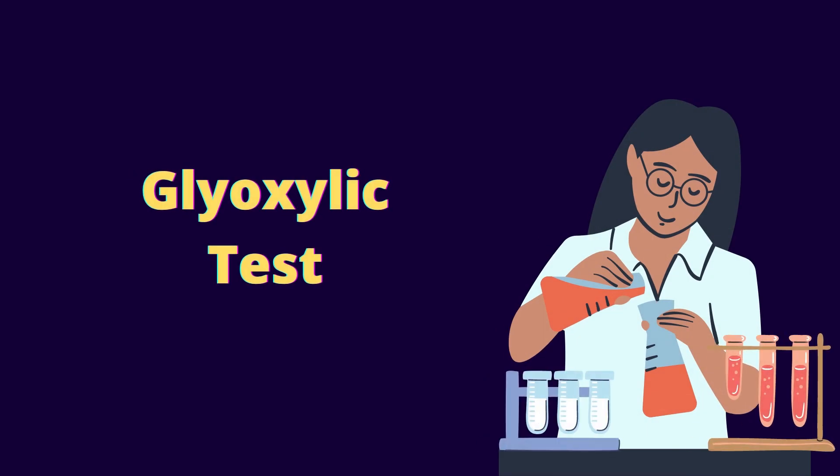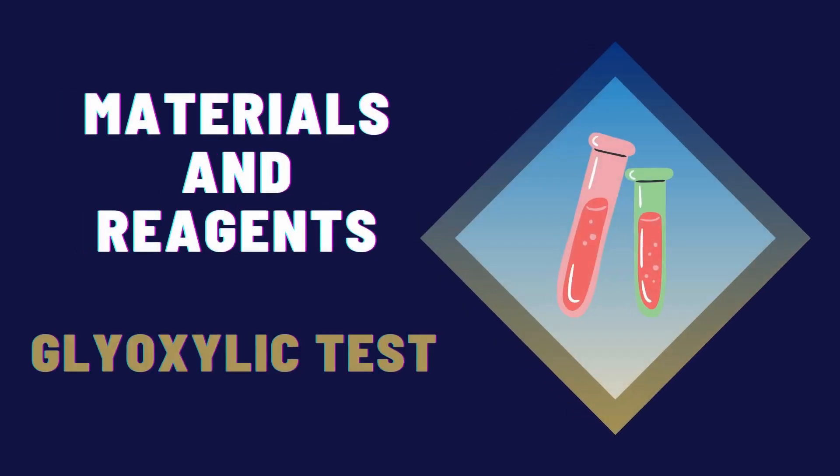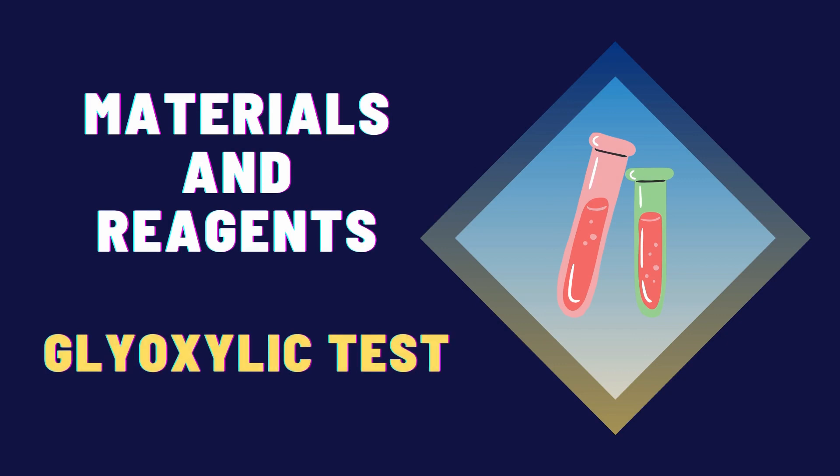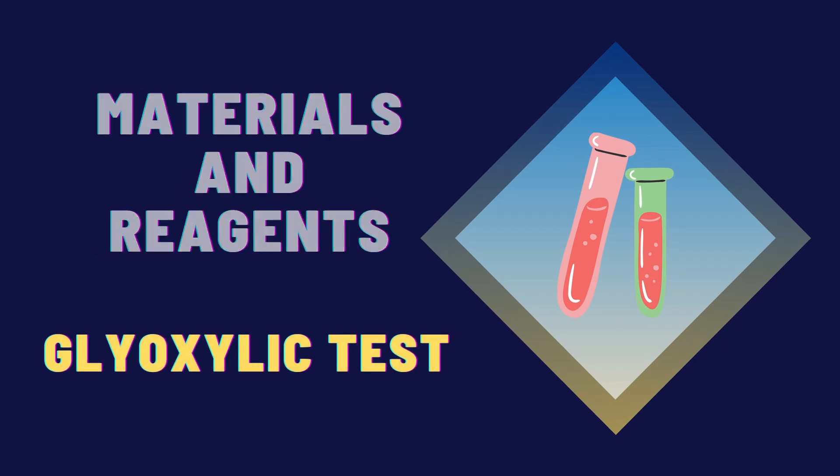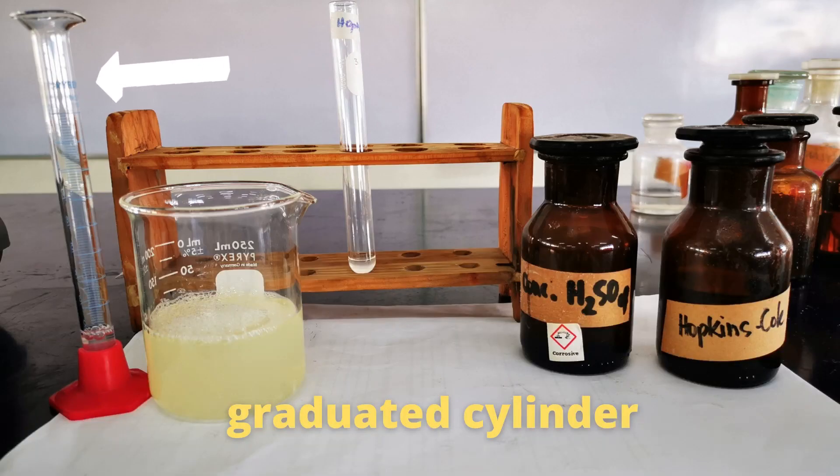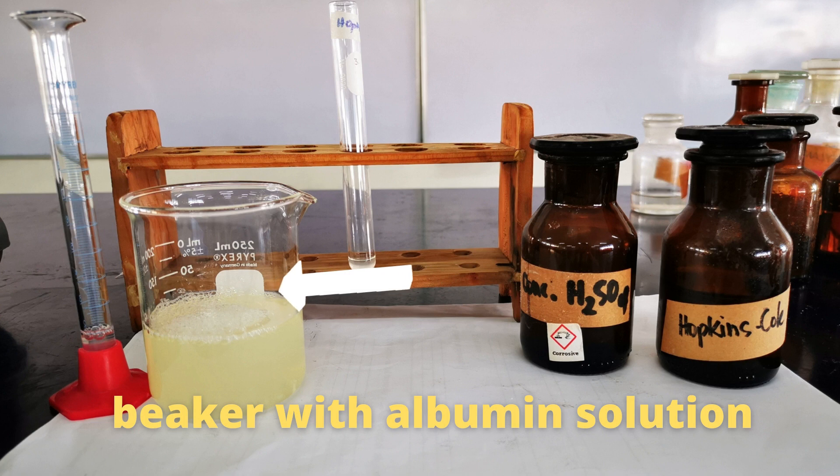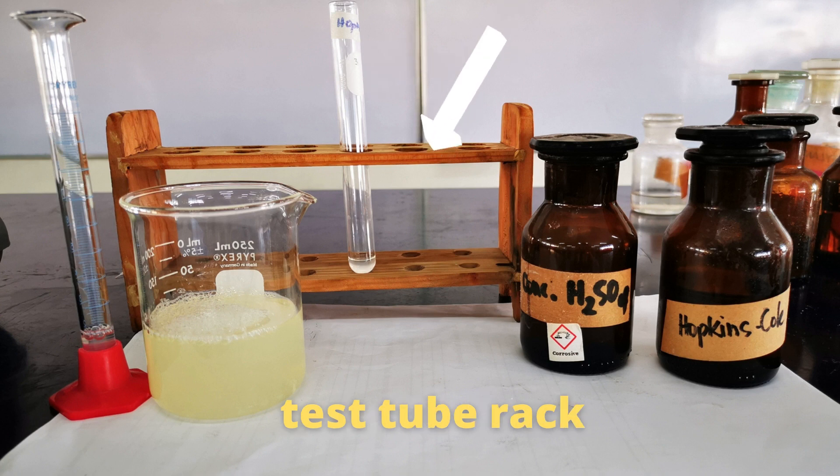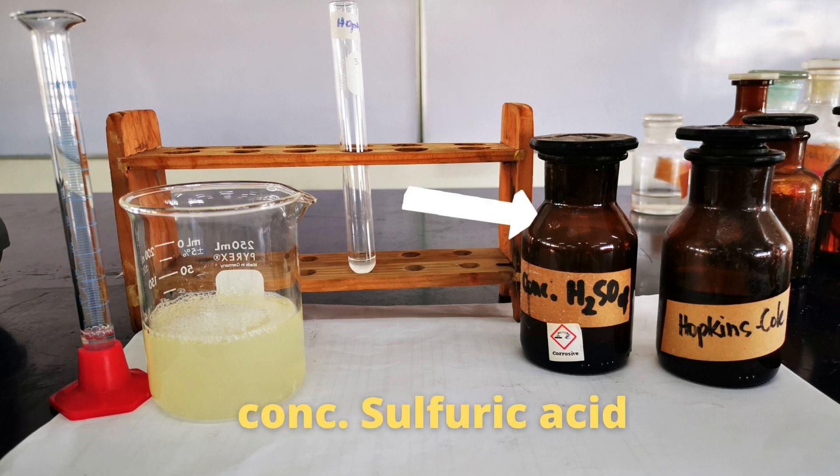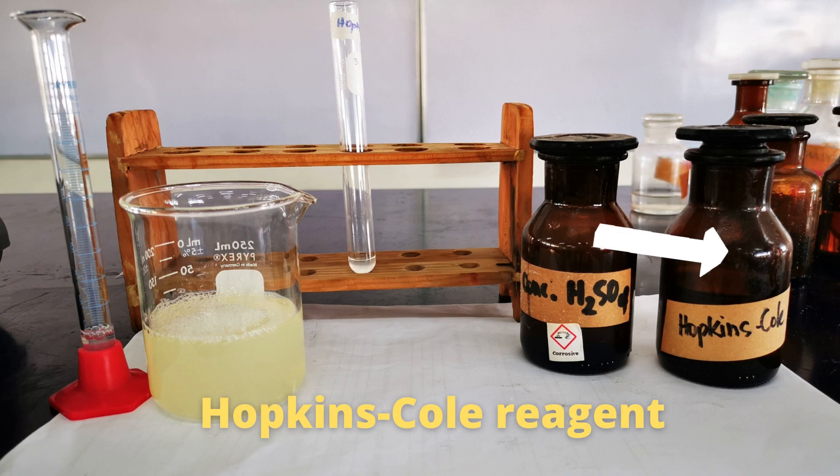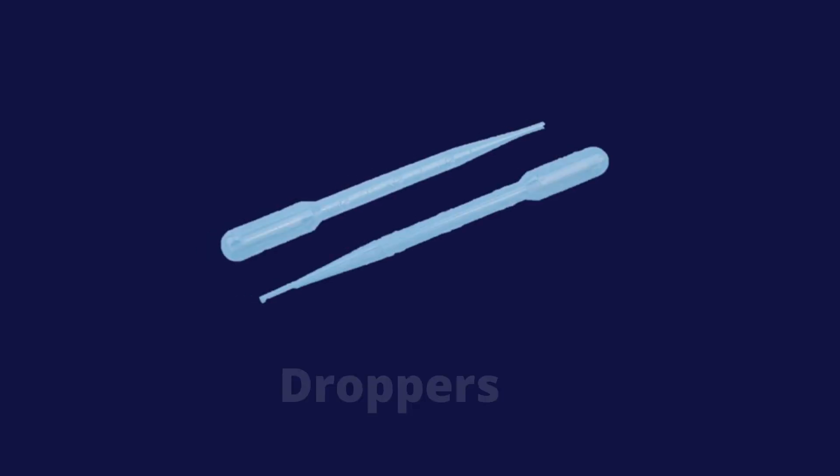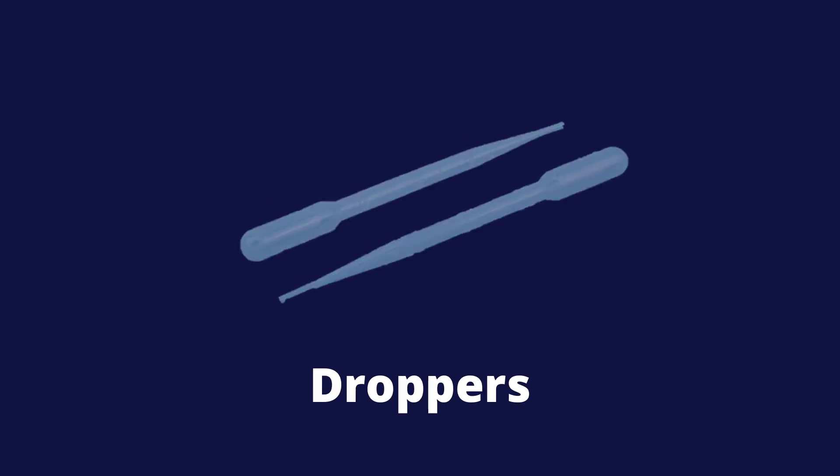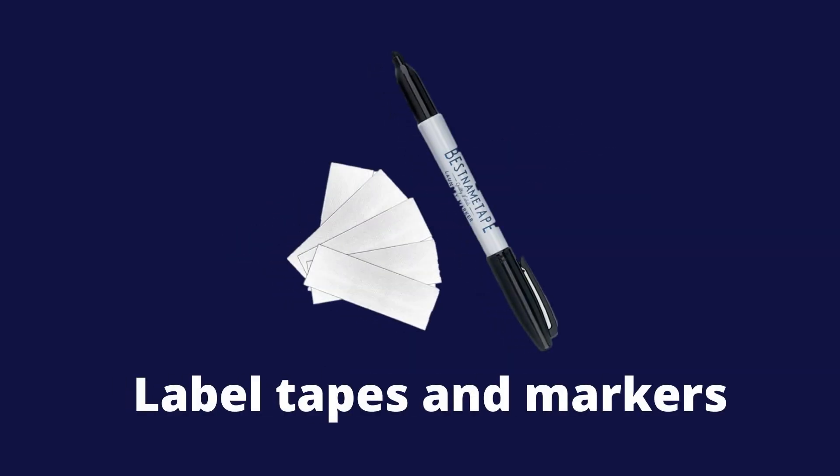Next, we have the glyoxylic test. These are the materials and reagents for glyoxylic test: graduated cylinder, beaker with albumin solution, test tube, test tube rack, concentrated sulfuric acid, Hopkins Cole reagent, droppers, and label tapes and markers.